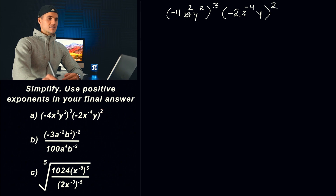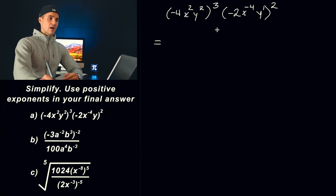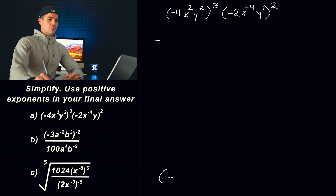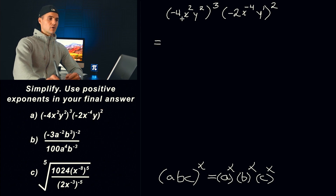Starting with this first one, we got negative 4, x squared, y squared, all of that to the power of 3. We got negative 2, x to the negative 4, and then y — there's like a power of 1 — and all of that is going to be to the power of 2. Now, first thing I'm thinking — and by the way, there are different ways to do this. You might go about this in a different way than I will. Just make sure that the final answer you get is the same as mine.